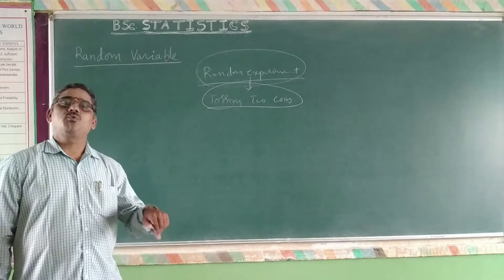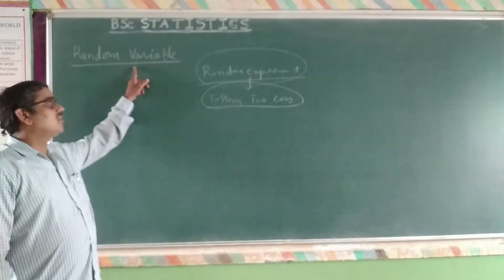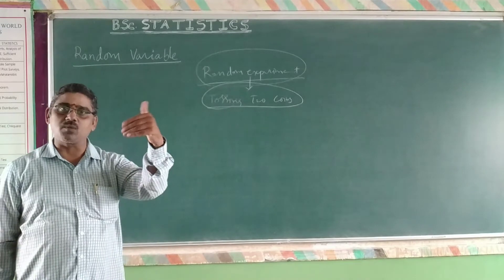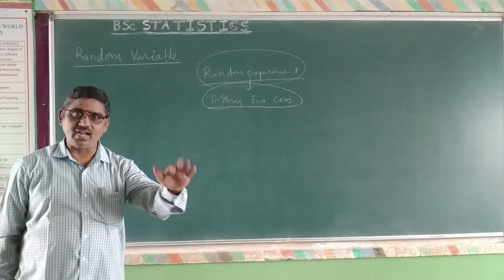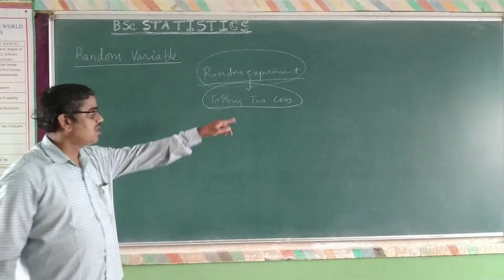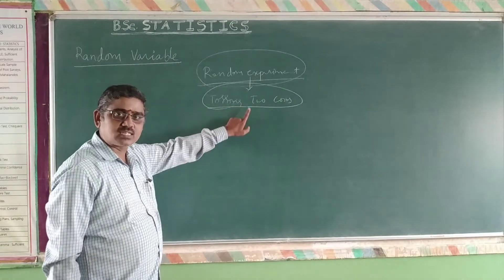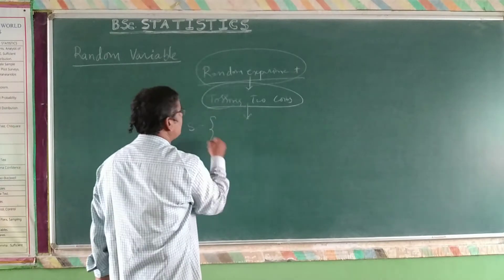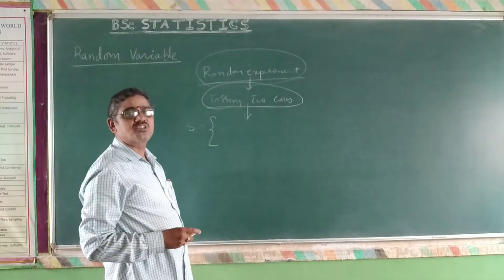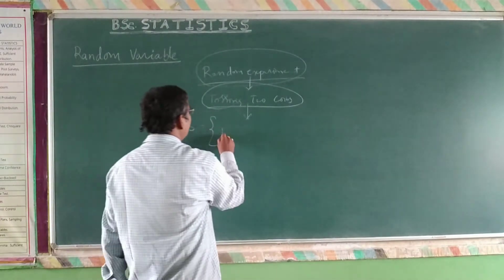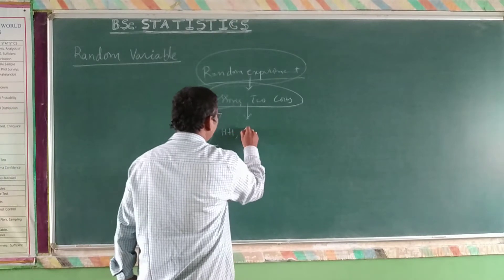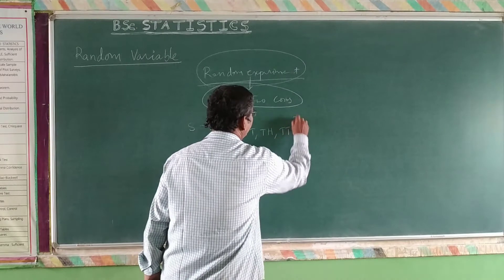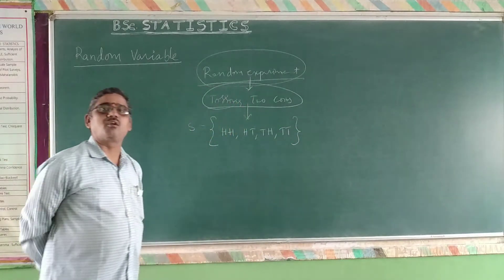Now, what do we want to do? The random variable is a real valued function defined on each and every outcome of the sample space connected with the random experiment. From the random experiment, you have to write the sample space first. The sample space S equals — the total number of outcomes if you toss two coins is: head-head, head-tail, tail-head, tail-tail — these are the four outcomes, that is 2 squared.